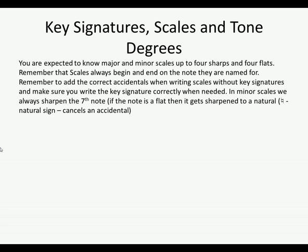In minor scales, remember to sharpen the seventh note. If the note is a flat from the key signature — for example, C minor has a B flat — the B doesn't become a sharp; it gets a natural sign. What we're doing is raising the seventh note by a semitone. If it's got a flat next to it, then to raise it a semitone it becomes a natural, and we put a natural sign next to it.